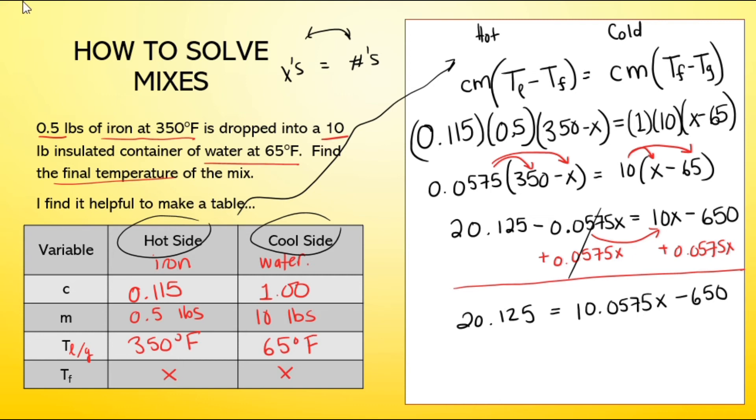I need to make that negative 650 come over to the left side. I'm going to add it to both sides. And we're going to have 670.125 when I add these two numbers together. And on the right side, everything has disappeared.